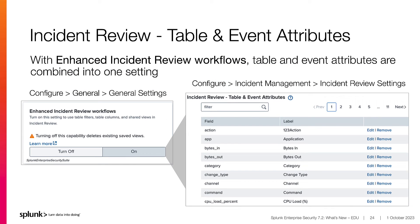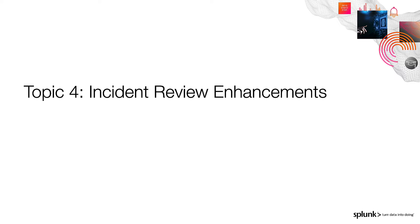Prior to ES 7.2 and the Enhanced Incident Review Workflow option, the Incident Review table and event attributes had separate configurations under Configure, Incident Management, Incident Review Settings. With Enhanced Incident Review Workflows turned on, table and event attributes are merged into one configuration. To revert to the old configuration, simply turn off Enhanced Incident Review Workflows under General Settings. Here, you can edit or add the fields and labels used in the Incident Review Notables table.